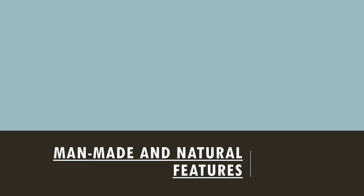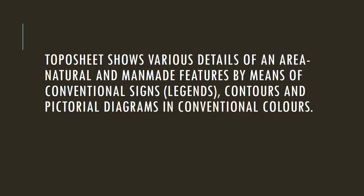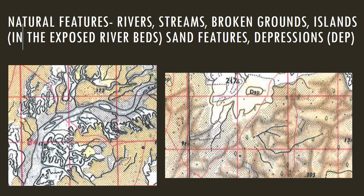In this class we will be learning about different man-made features and natural features. A toposheet shows various types of man-made and natural features in a topo map, and they are explained with the help of conventional signs and symbols and contour lines. There are some pictorial diagrams and we have to identify those. Let's look at the natural features.